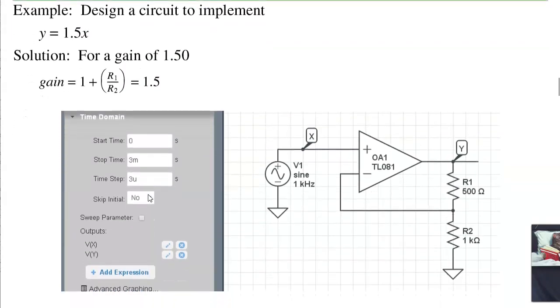As an example of a non-inverting amplifier, design a circuit that has an output of 1.5 times the input. So I want to amplify by 1.5. The gain is 1 plus the ratio. I want a gain of 1.5, so this side would be 0.5 to 1. So arbitrarily picking this to be 1K, half of that.